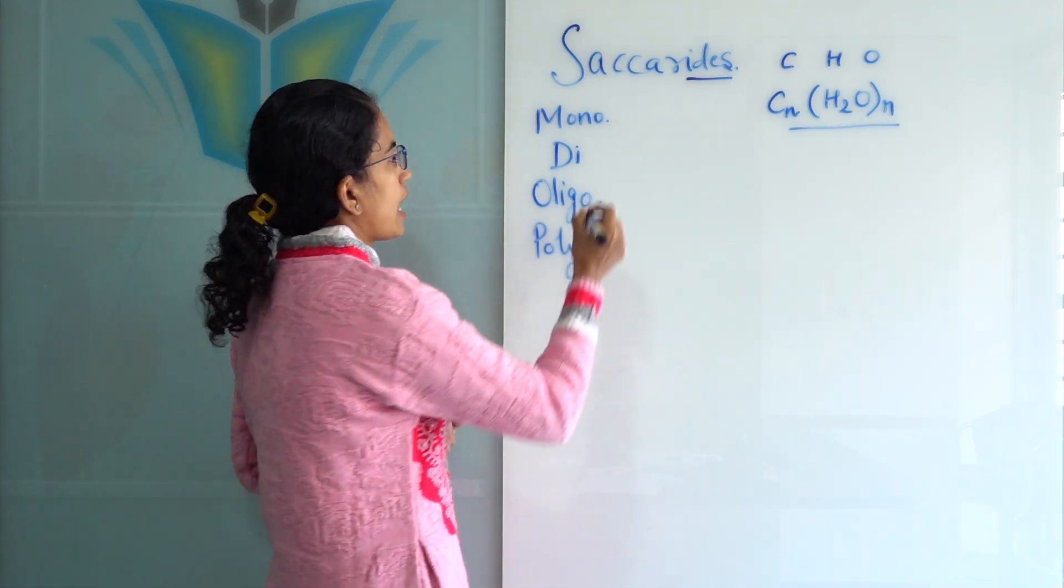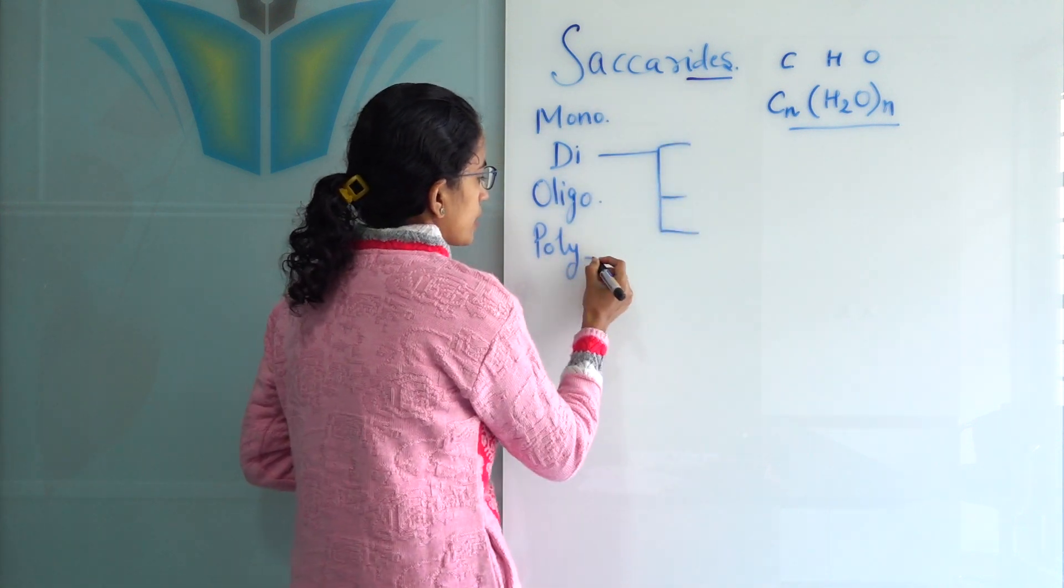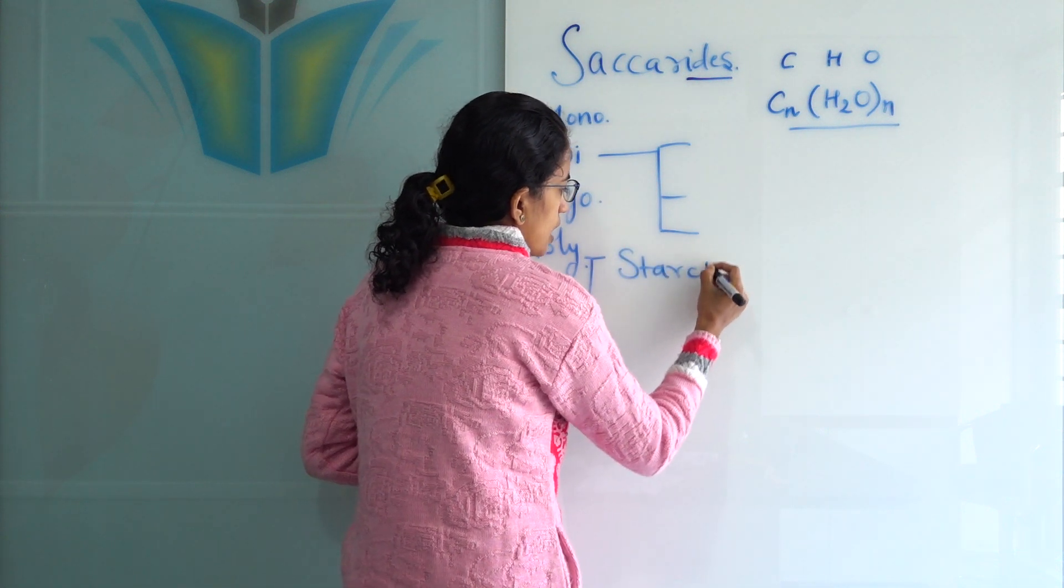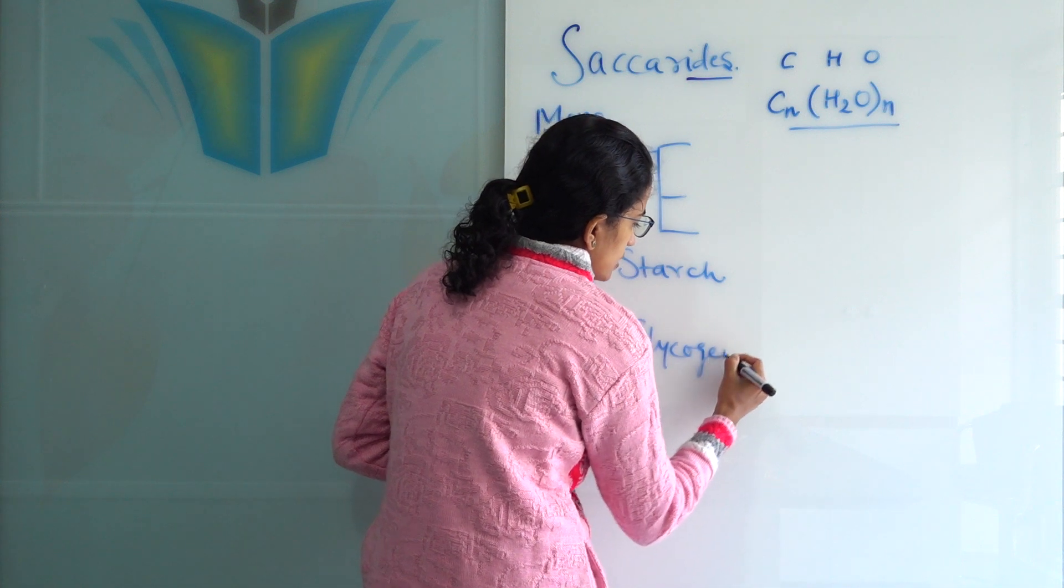So, here let's understand three important disaccharides and three important polysaccharides. So, the three important polysaccharides are starch, glycogen and cellulose.